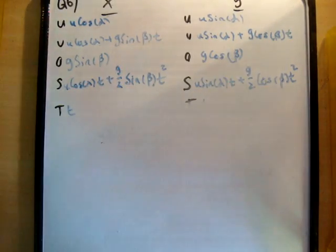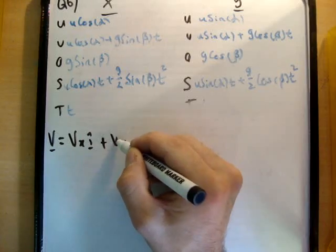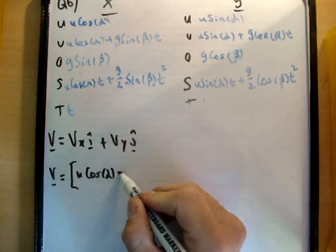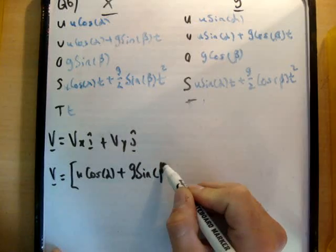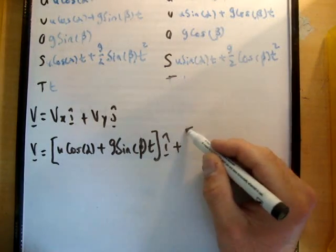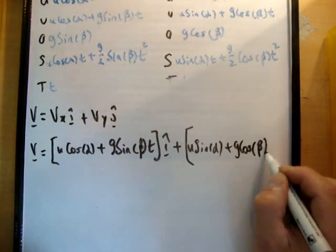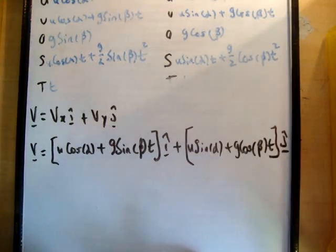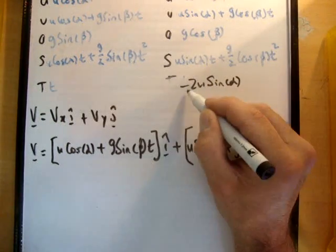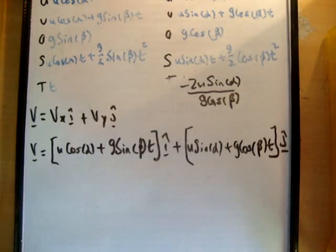So what we need to do is find out the final velocity vector v. And we do that by plugging our answer for t into v sub x and v sub y. So if we go back up here, we'll find that v equals v sub x i hat plus v sub y j hat. So v equals u cos alpha plus g sin beta t i hat plus u sin alpha plus g cos beta t j hat.